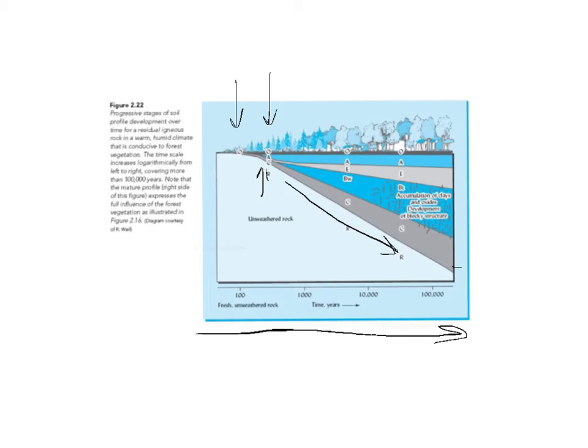So those are some things to think about—that we're making this rock into soil. Over time, as we become more mature and even more mature, horizons are being formed. Things are being moved down into the soil. We start out with a very thin E-Horizon, and then it gets thicker and thicker.